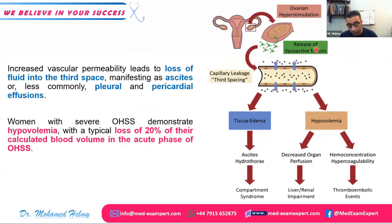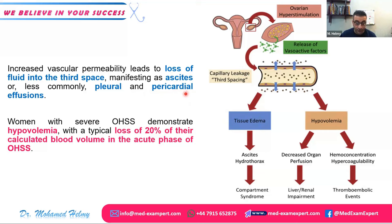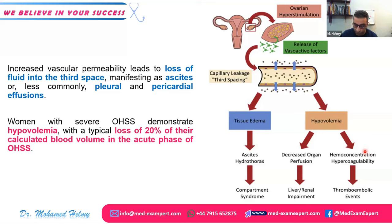The vasoactive inflammatory mediators, especially VEGF, increase vascular permeability, causing fluid leakage from capillaries into interstitial tissue — producing edema — and into third spaces causing ascites, pleural effusion, and pericardial effusion in severe cases. This hypovolemia leads to hemoconcentration, hypercoagulability, thrombotic events, and decreased organ perfusion causing liver and renal impairment.